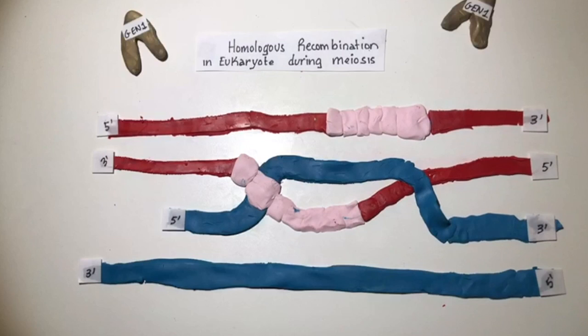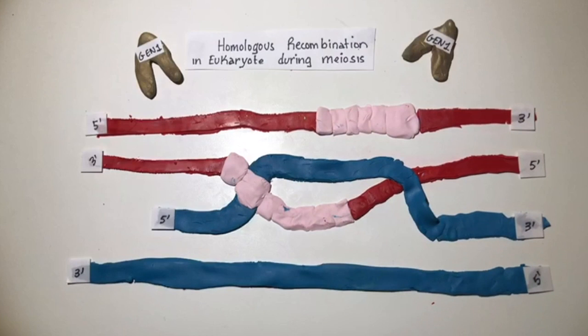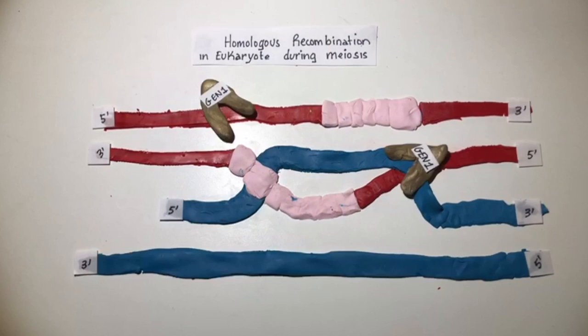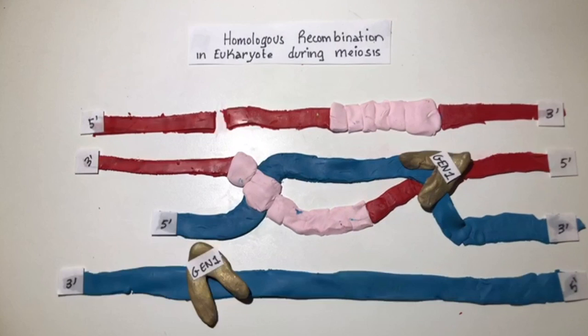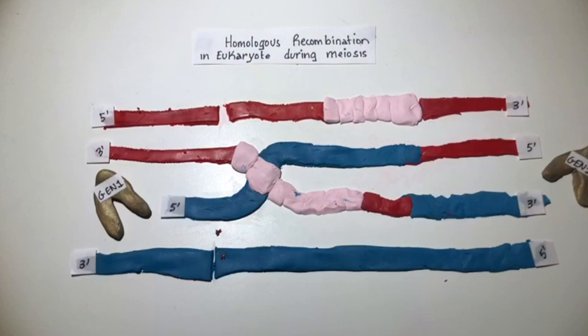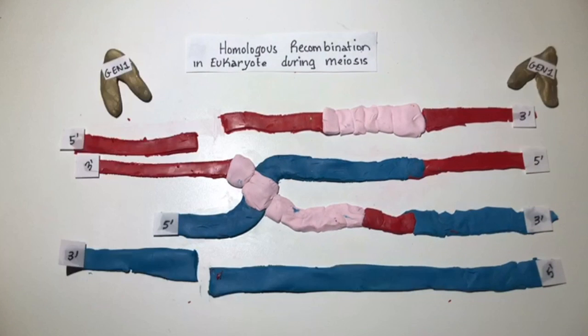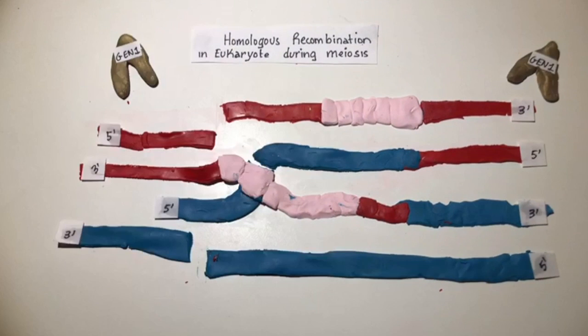The Holliday junction is resolved when the protein GEN1 cuts the DNA substrates. The GEN1 protein is specific to homologous recombination in eukaryotes.